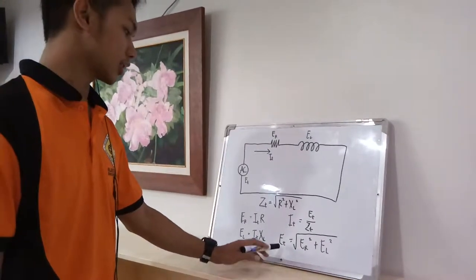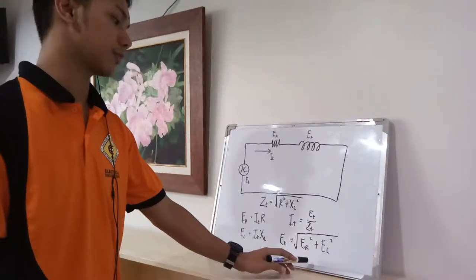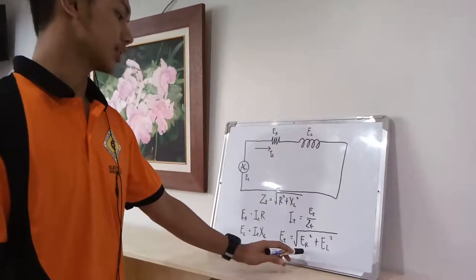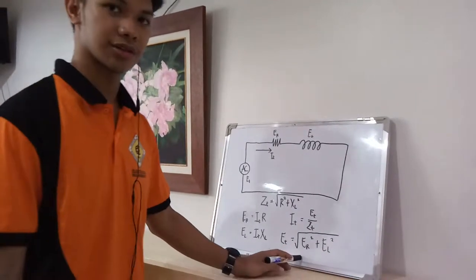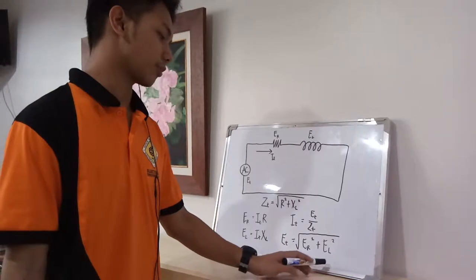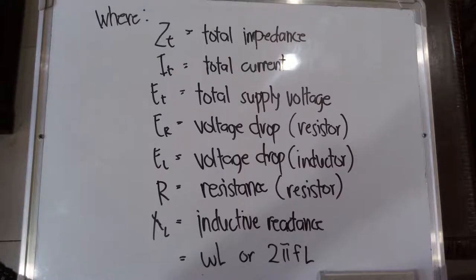For getting the total voltage, we have the square root of E sub R squared plus E sub L squared, where E sub R is the voltage drop across the resistor and E sub L is the voltage drop across the inductor. R is the resistance and X sub L is the inductive reactance, which is equal to ωL or 2πFL.